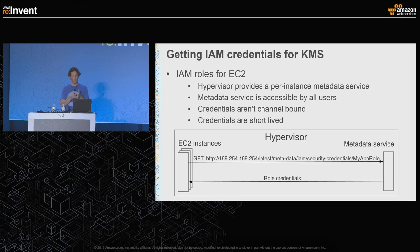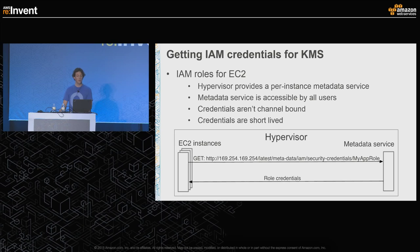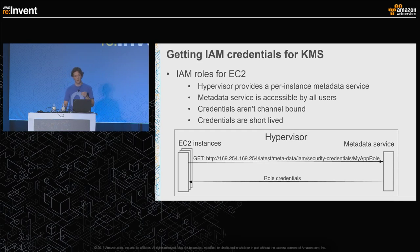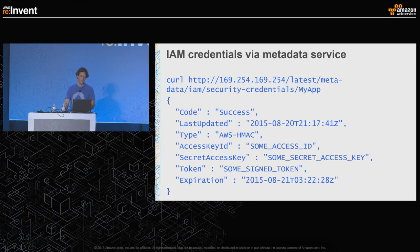If you use the default security provider for getting credentials to KMS, it makes a request to the metadata service within EC2. Every EC2 instance is launched with access to a static IP where you can query for metadata about the service, including credentials to talk to KMS. We dug into that — if you take those credentials off that machine and use them on another machine it does work, but the team has put in place short-lived credentials so if someone were to gain access to them they would only be valid for a short period.